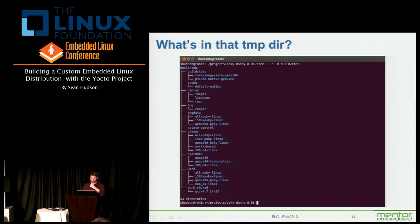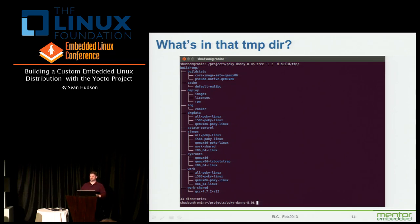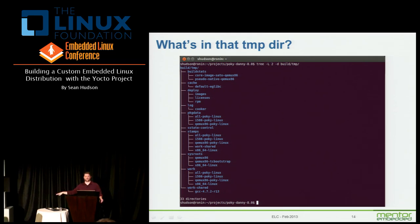I showed you the tmp directory at the top level — just two levels deep, but there's a whole mess of stuff here. Build stats contains useful build statistics information. Deploy is important to know because this is where your actual images go — keep that in mind if you're hunting around trying to figure out where did my root file system end up, or where did my kernel image end up. It's underneath there.